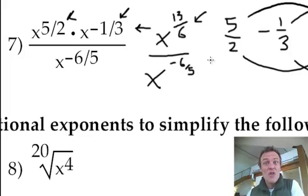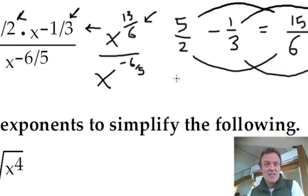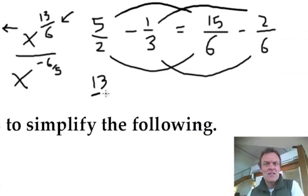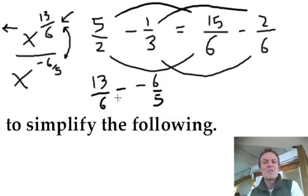So I'm going to now subtract exponents. So 13 sixths, take away, and be careful, it's a negative 6 fifths. So remember, I'm just subtracting these two, because it's the quotient rule now, but that's a double negative, so eventually I'll be adding these, remember? But I still need to go for common denominators,